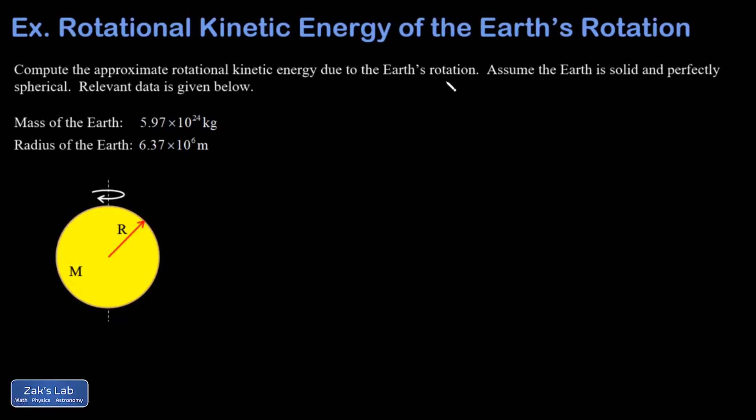We're making some approximations, obviously. We want to assume the Earth is solid, which is not true. There's all kinds of complex dynamics going on in the liquid outer core and so on. Perfectly spherical, also not true. It's a little bit squished, so a little bit larger radius at the equator than at the poles. But this is a good first approximation.